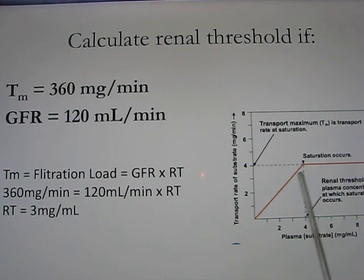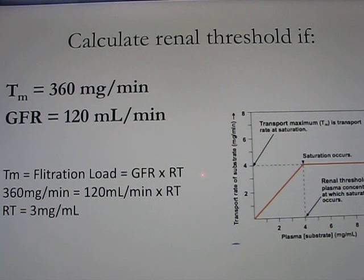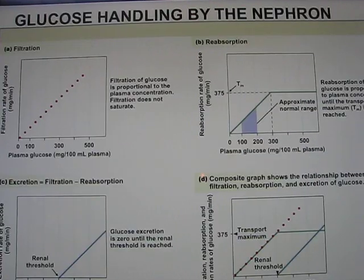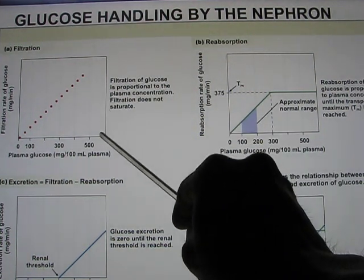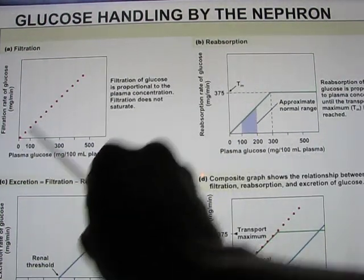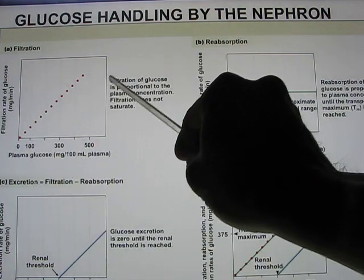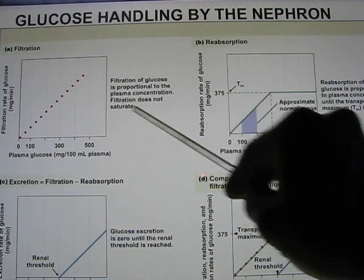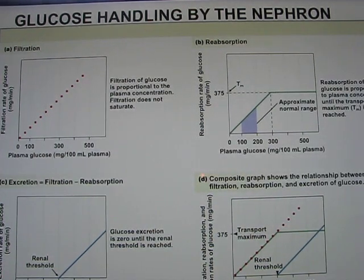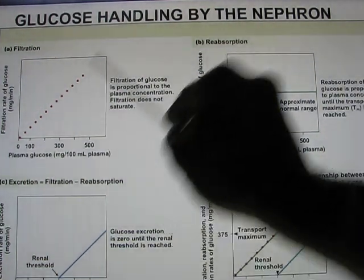We want to keep blood sugar below the renal threshold. Looking at the filtration curve, it is a linear relationship — the more glucose in the blood, the more is filtered into the nephron, because filtration is non-selective. Glucose is a small molecule, so the more you have, the more gets filtered in.